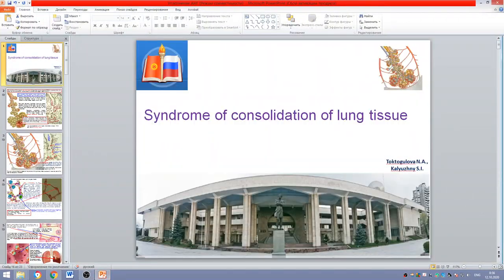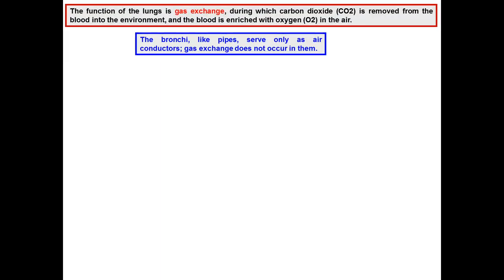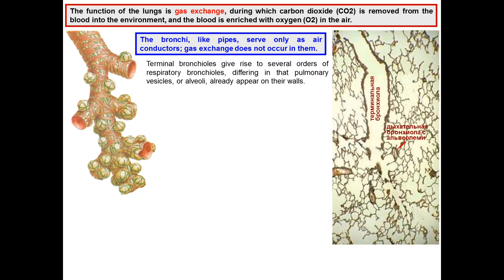Hello, dear respected students. Today's lecture belongs to the syndrome of consolidation of lung tissue — a very large syndrome that may present in many different kinds of disorders. Let's start discussing from normal physiology and anatomy, because now we'll go into the pathology of lung tissue. The main function of the lung is gas exchange, and bronchi, like pipes, serve only as air conductors.